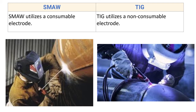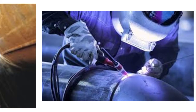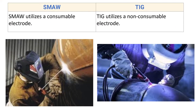Now TIG utilizes a non-consumable electrode. Here you can see the tungsten inert gas welding process. The welder holds a torch in his right hand and the filler metal in his left hand. The arc is generated between a non-consumable tungsten electrode and the base metal, and the filler is additionally supplied if required.